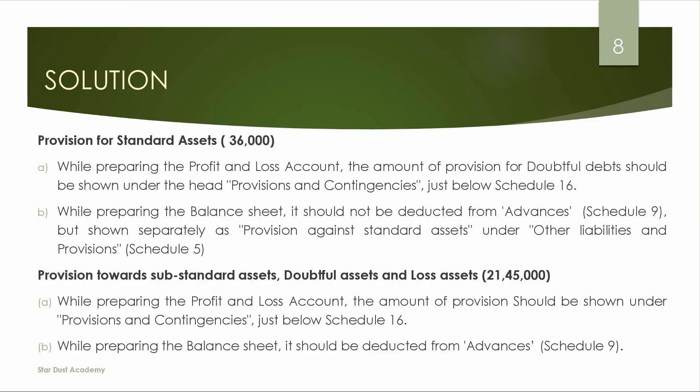While preparing the Balance Sheet, the provision should not be deducted from Advances in Schedule No. 9. Instead, provision against Standard Assets should be shown separately under Other Liabilities and Provisions, which is Schedule No. 5. For provisions against Standard Assets, the amount of 36,000 is shown under Schedule No. 5 — Other Liabilities and Provisions.